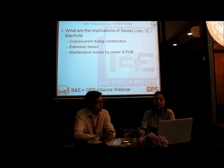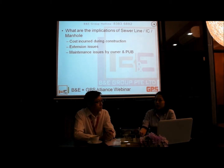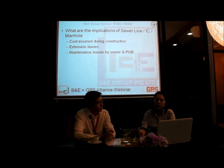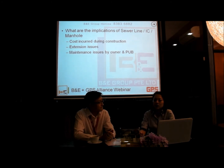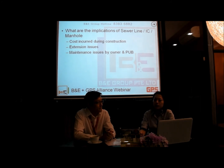Another issue to note is that PUB will come to your unit for maintenance. When there is a manhole or a sewer line within your unit, it means PUB needs access for their maintenance work, which will indirectly cause inconvenience. So all of these are technical terms to look into before purchasing the property.